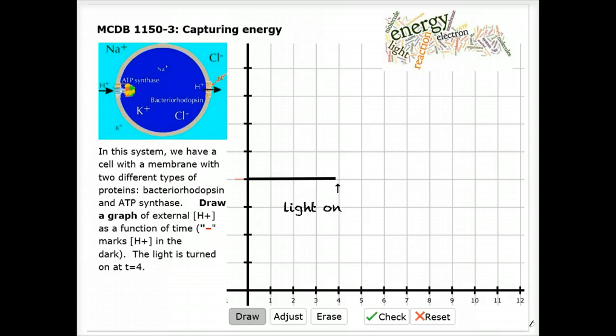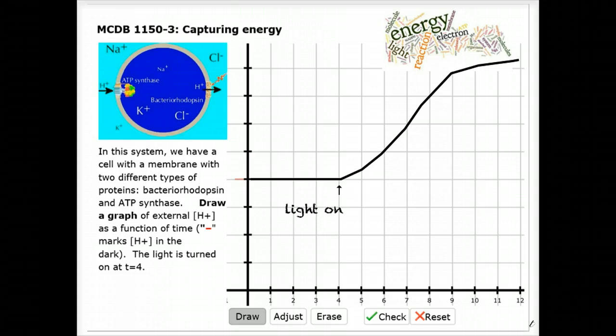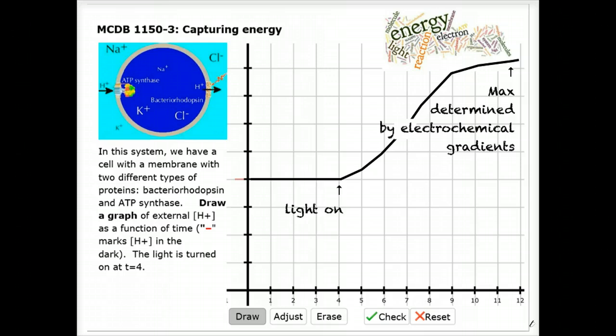When we turn the light on, hydrogen ion concentration outside begins to rise, and it will rise up until the time that it is opposed by the equal and opposite force of the electrochemical gradient formed by the movement of the hydrogen ions.